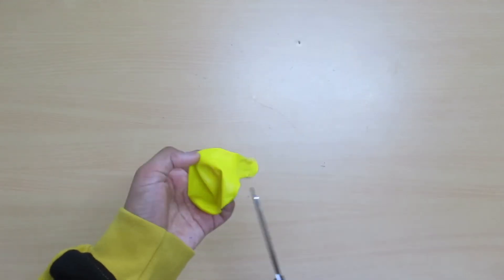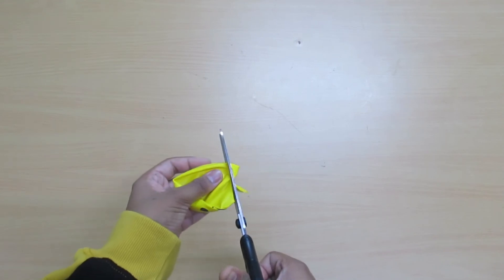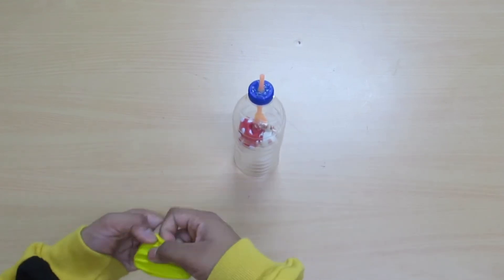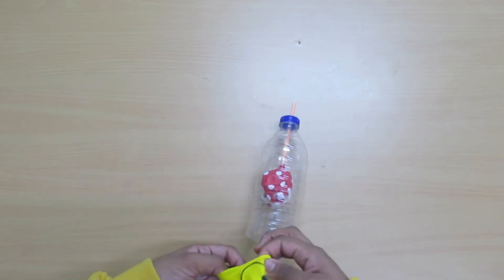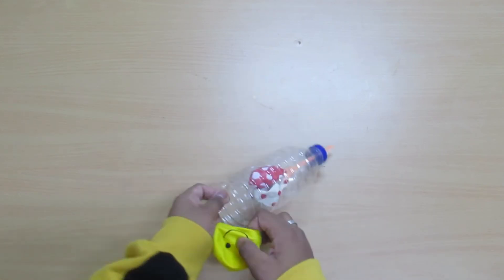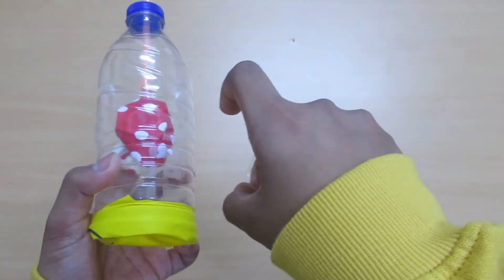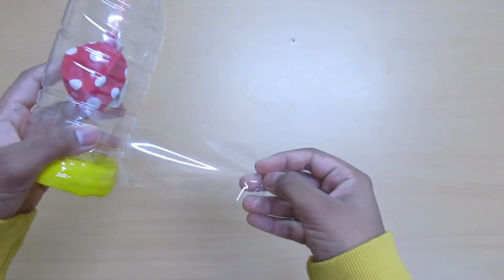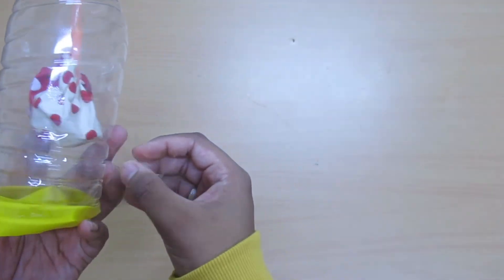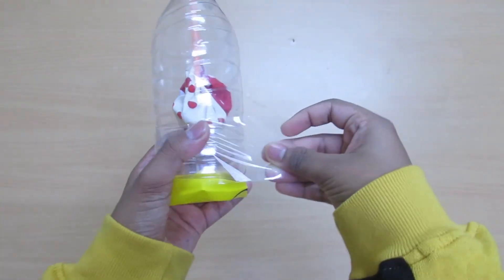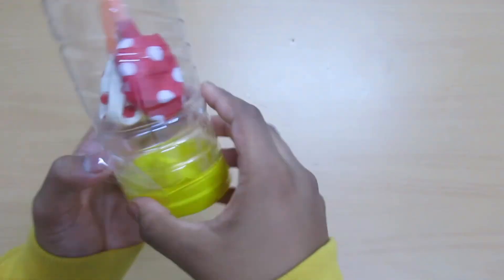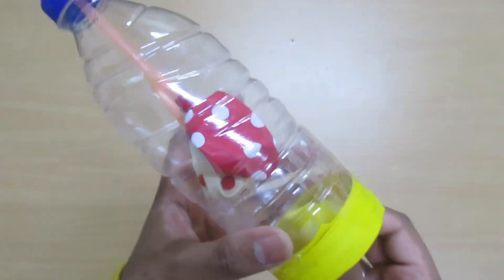Now take another balloon and cut right about here. Now take your bottle and stretch the balloon, put it on the bottom of the bottle. Now tape it to prevent air leak. Now our lungs are completed.